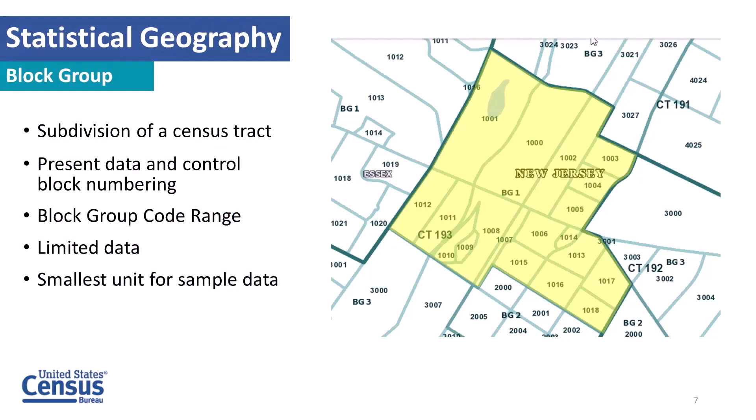A block group is a subdivision of a census tract. It's a way to present data and control block numbering, and we have a range for block codes. There is some limited data available at the block group level — it's the smallest unit for sample data, meaning data coming from the ACS. Participants can renumber their block groups every 10 years if they see fit.